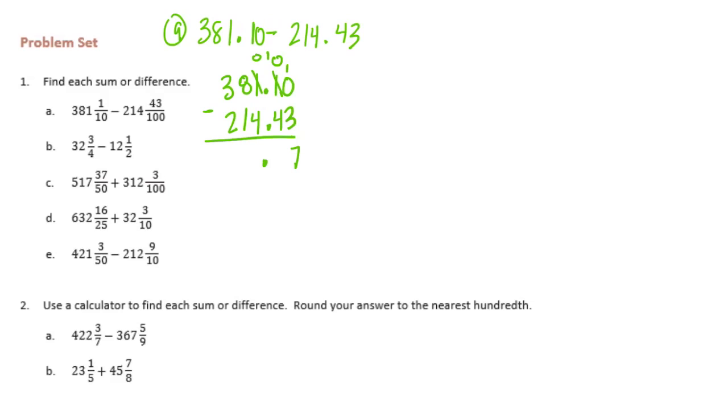10 minus 4 is 6. Need to borrow again. 10 minus 4 is 6. 7 minus 1 is 6, and 3 minus 2 is 1. So we get 166 and 67 hundredths.